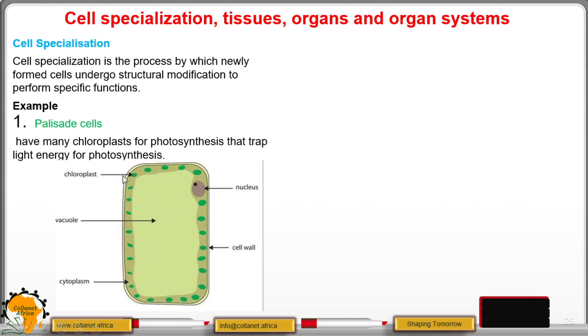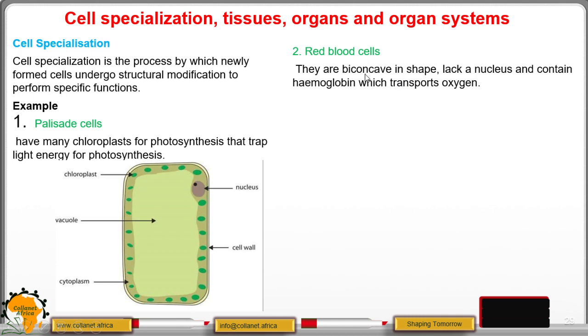You can see this is a palisade structure with numerous chloroplasts. We have the red blood cells, which are biconcave in shape and lack a nucleus but contain hemoglobin to transport oxygen.